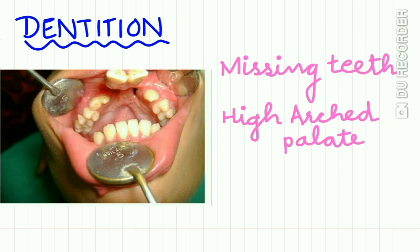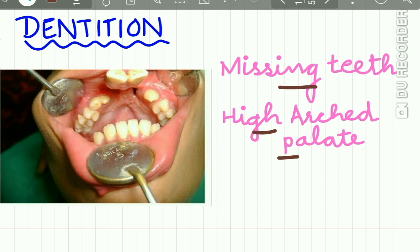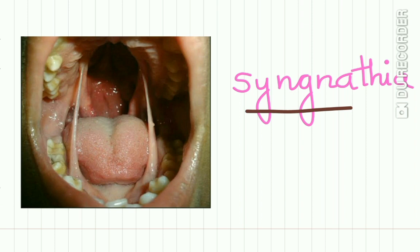Regarding how dentition is affected by Van der Woude Syndrome, there are mainly missing teeth. As seen here, some teeth are missing — mainly the incisors and the premolars. A high arched palate can also be seen in these patients.